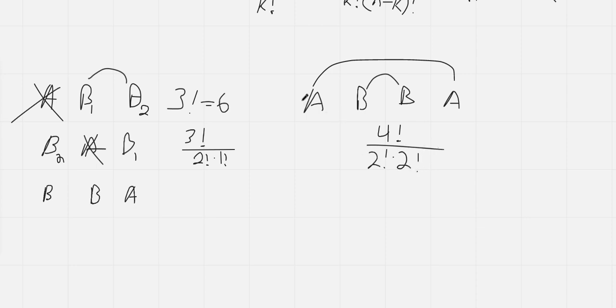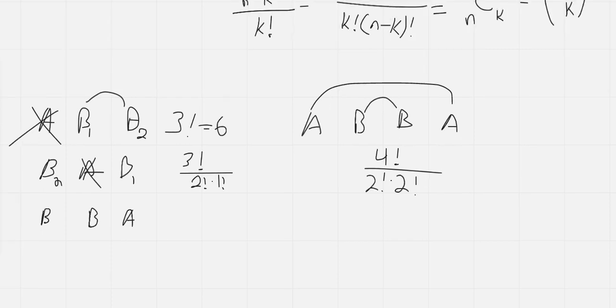Now, if we notice, this is just the same as our combination formula, because here our terms are adding up to what we have in the top. We have two plus one is three, two plus two is four, and that's because if we're only dealing with two letters, then however many we have in A is the total minus however many we have in B.